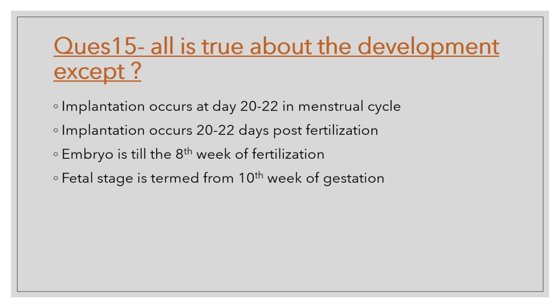Question number 15: All is true about development except — implantation occurs 20 to 22 days in the menstrual cycle, or implantation occurs 20 to 22 days post-fertilization.